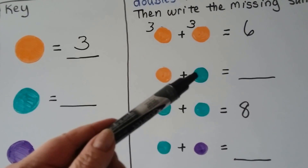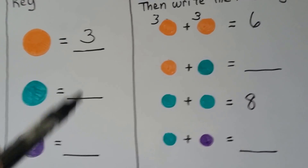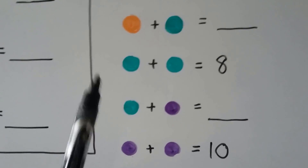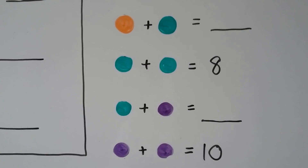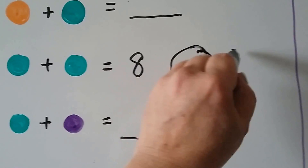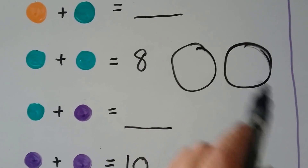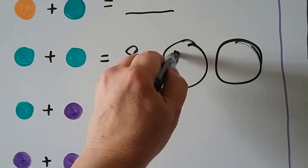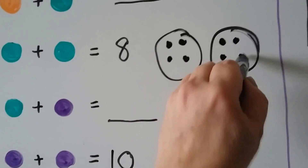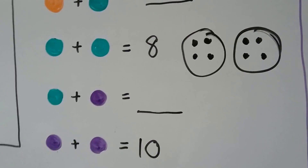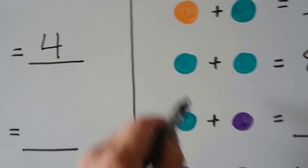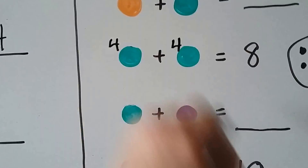We need to find the other values before we can solve everything. A green one plus a green one equals 8 — that's a doubles fact. Do you know what doubles fact equals 8? We can make two groups and count back and forth with counters until we get to 8: 1, 2, 3, 4, 5, 6, 7, 8. That's 4 plus 4, so each green circle must be equal to 4.